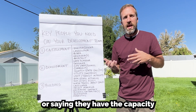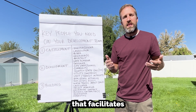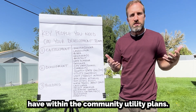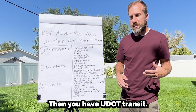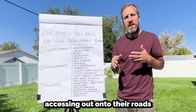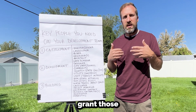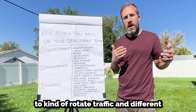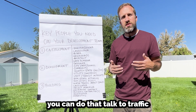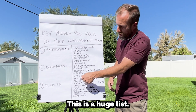Utility companies obviously need to be involved — they've got to provide a will-serve letter confirming they have the capacity for what you're proposing. You have to work with their team to design a plan that facilitates project success and maintains their existing utility infrastructure. Then you have UDOT and transit. UDOT has strict requirements for access onto their roads, so you want to make sure they grant the access needs for your project to manage traffic flow.